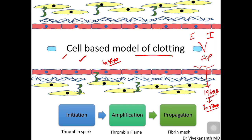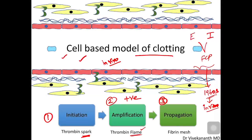The cell-based model has three steps: number one is initiation, number two is amplification, and the third is propagation. Initiation involves formation of a small amount of thrombin which is called the thrombin spark. Amplification involves a positive feedback where the amount of thrombin developed is amplified to a very high amount — we call it thrombin flame. This huge amount of thrombin helps the third stage, which is formation of a fibrin mesh work that will seal the blood flow.